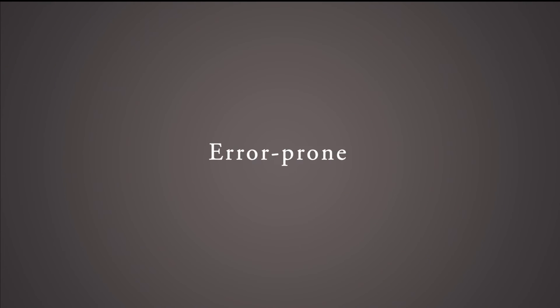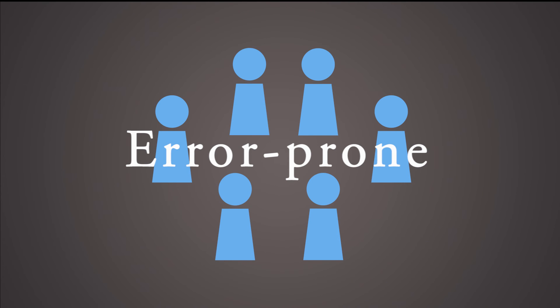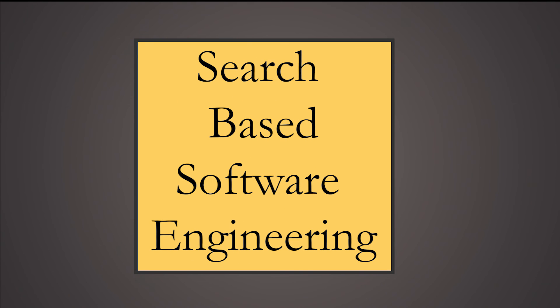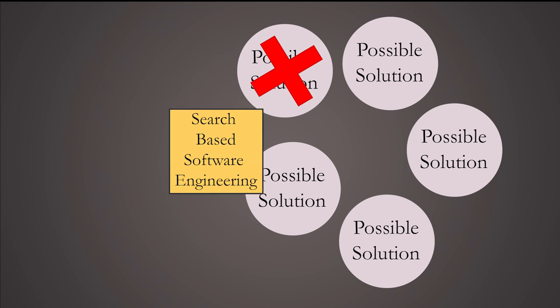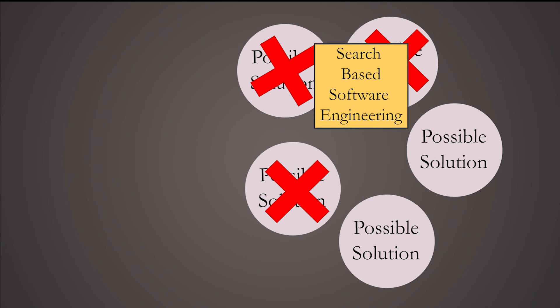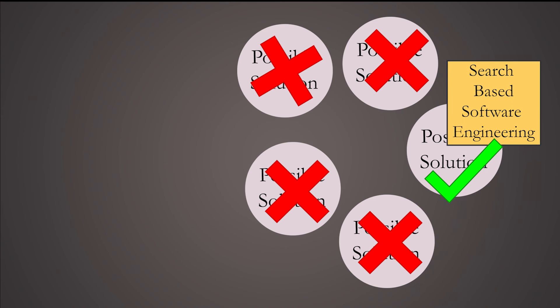The process of software development is still error-prone as it is always up to humans to find solutions to problems that may come up throughout the development process. But what if there was a way to mathematically identify the best possible solution at given instances in the process? That's what research in search-based software engineering is about. Instead of using human common sense to find a solution, different methods are used to choose the optimal solution among a set of many solutions.